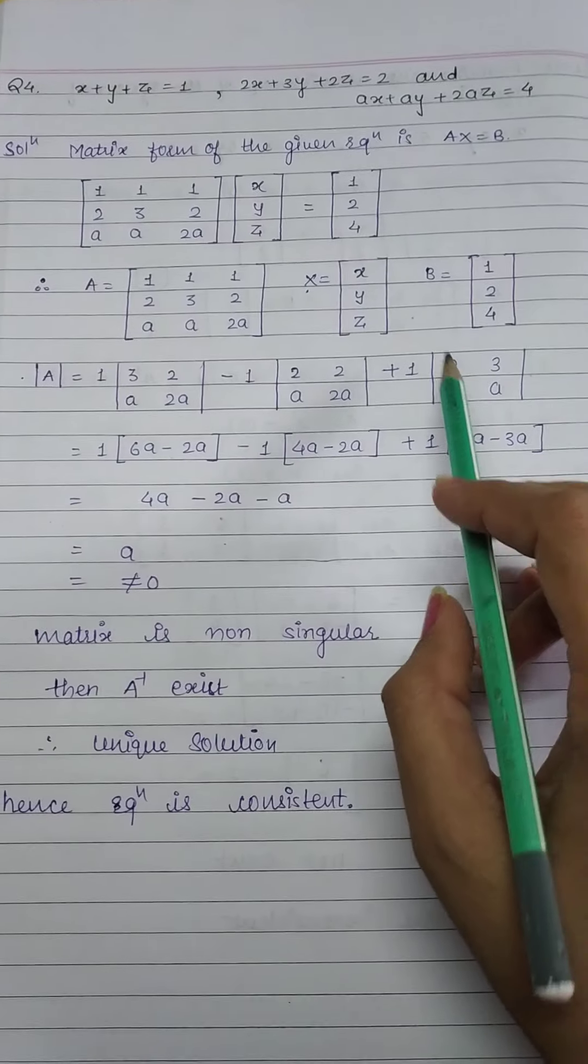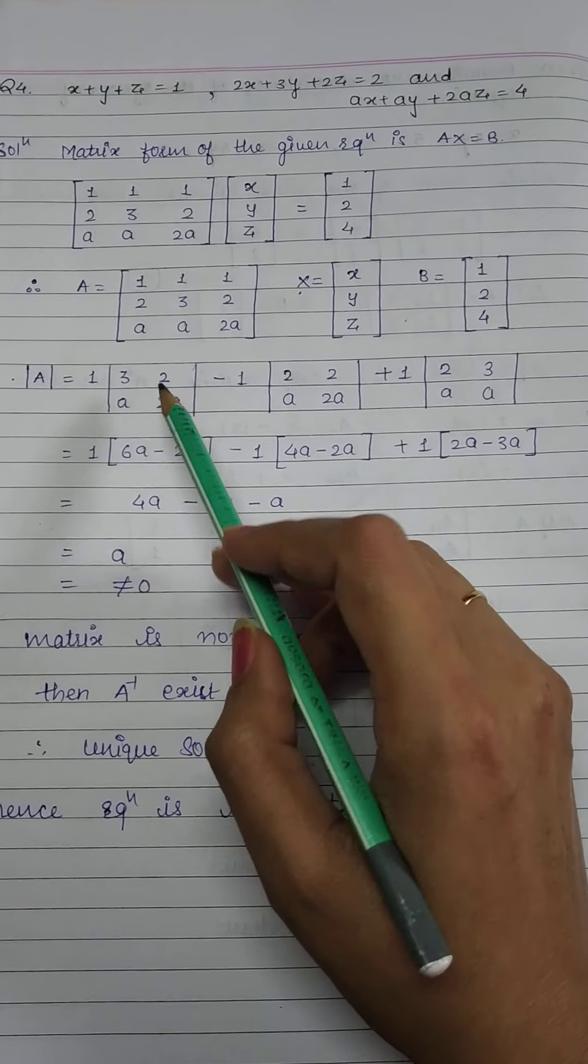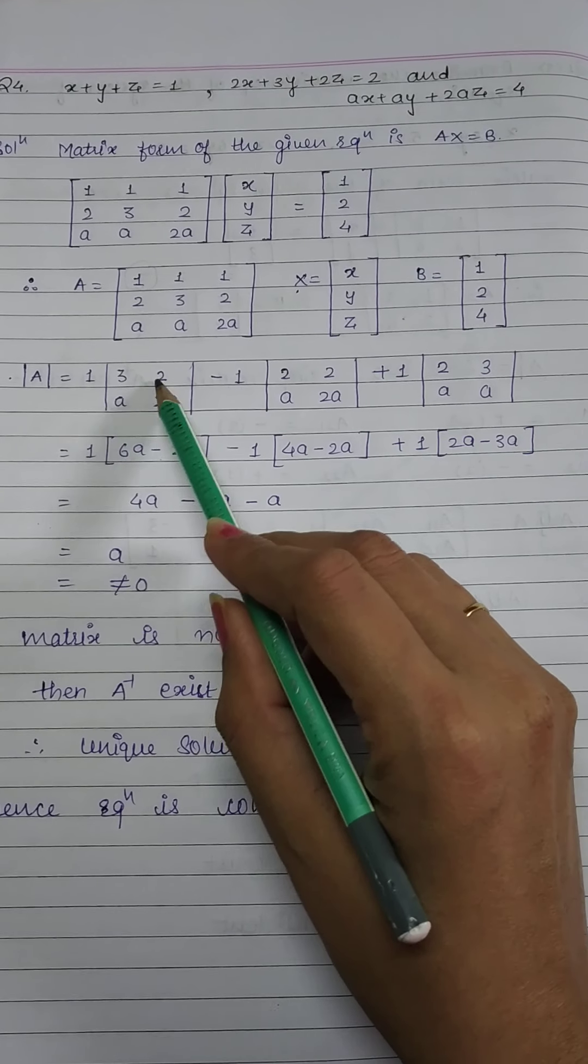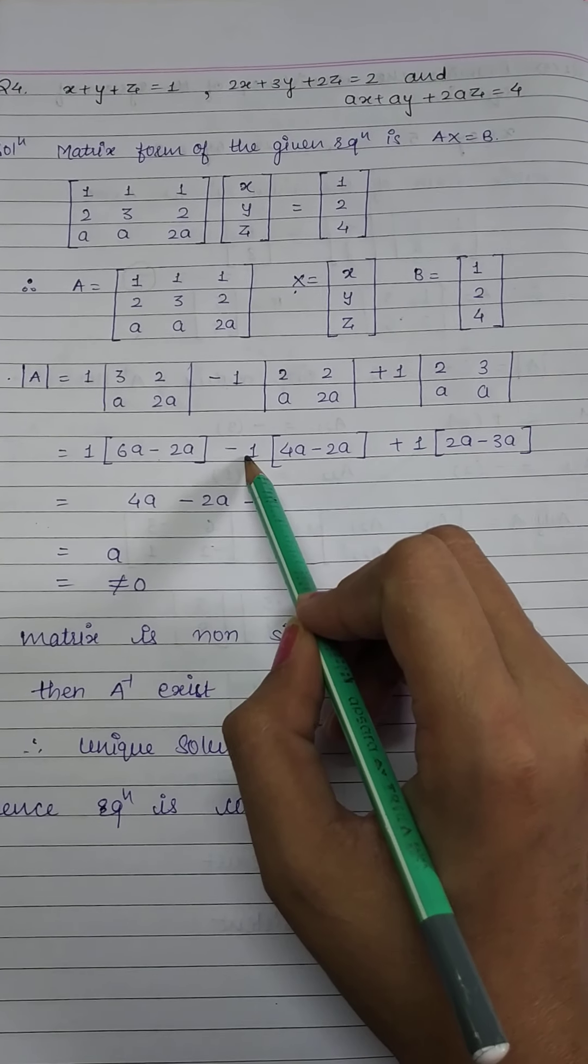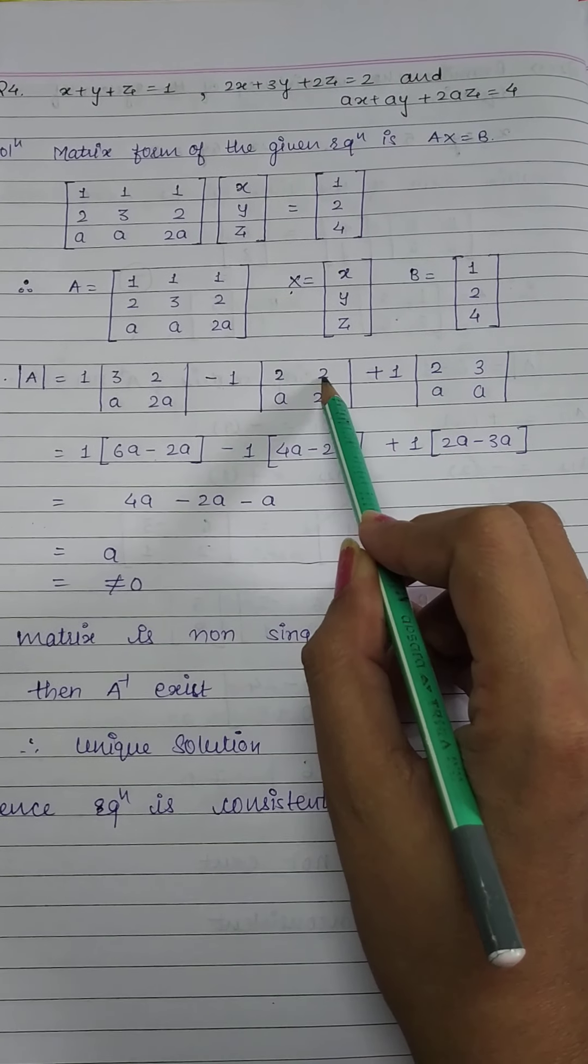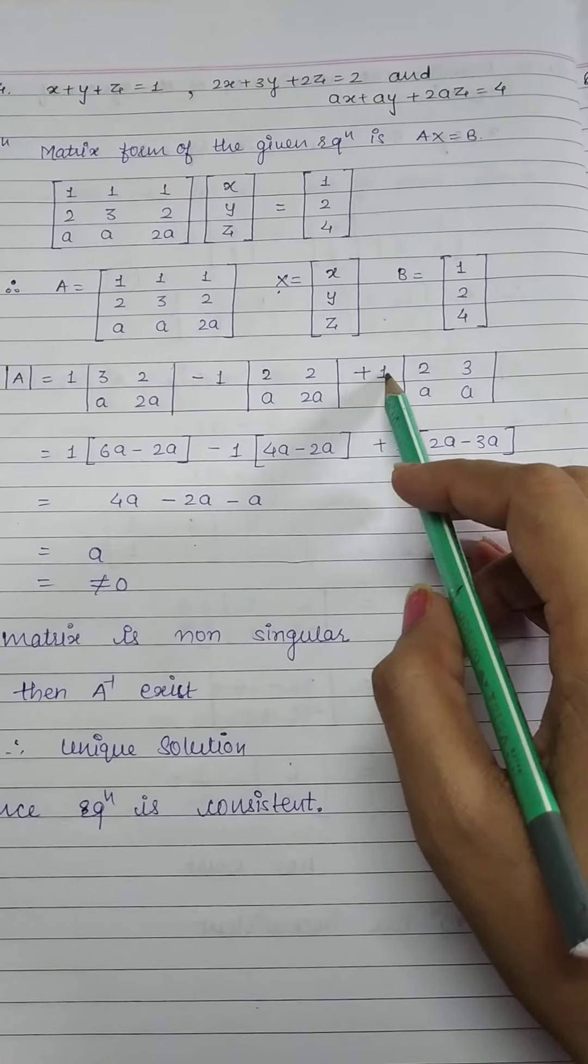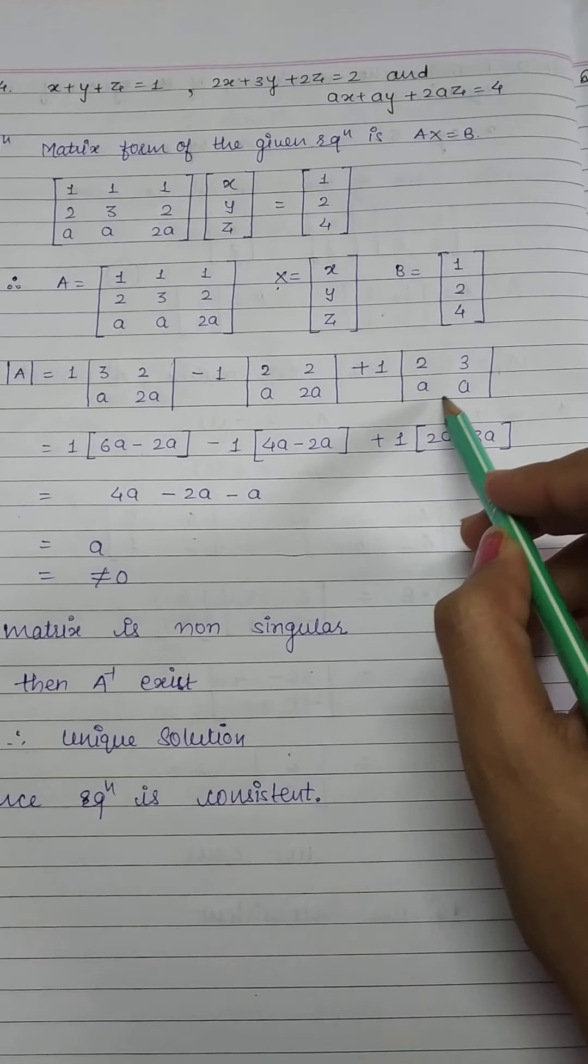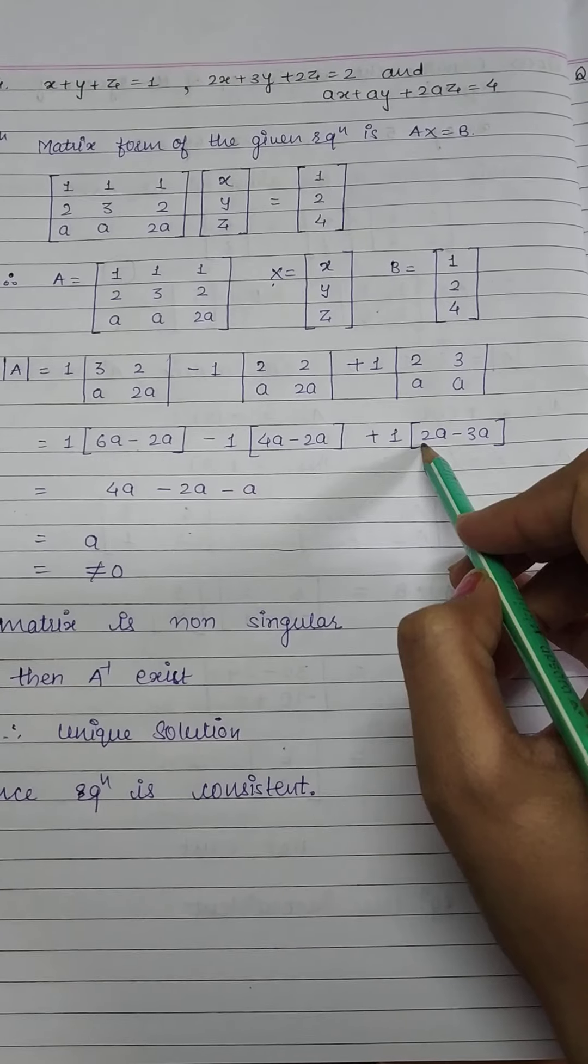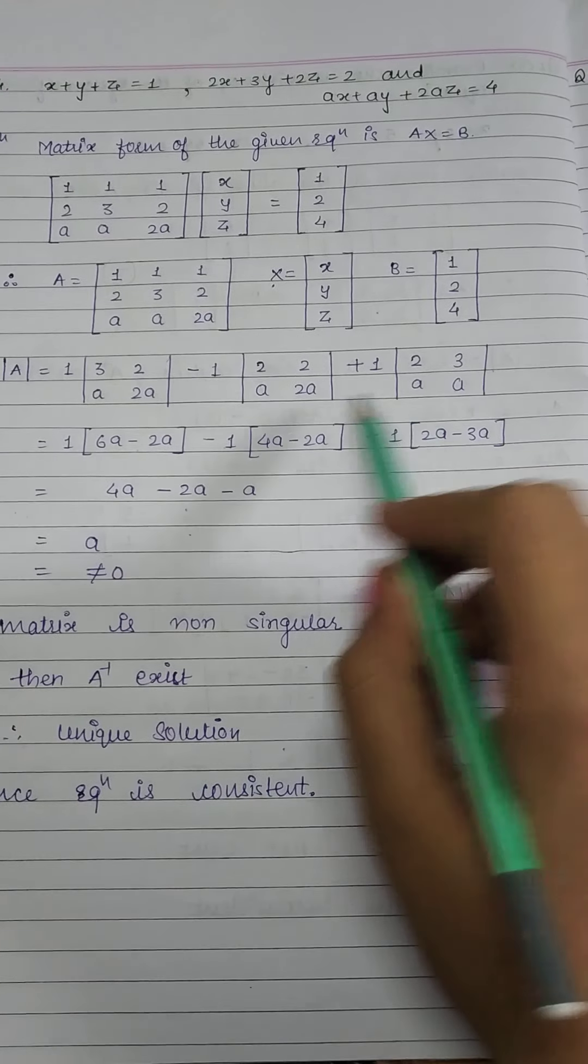Coefficient of x means 1. Coefficient of y again 1. Coefficient of z is 1, right? Now the coefficient of x is 2. Coefficient of y is 3. And the coefficient of z is 2. Coefficient of x is a. Coefficient of y is a.